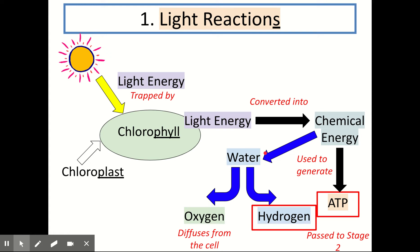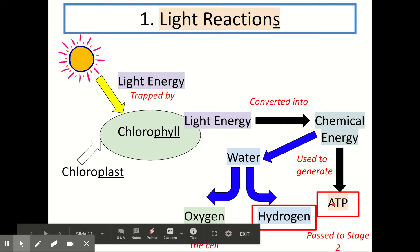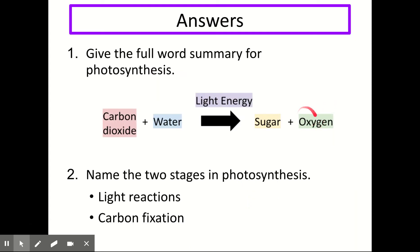Going through that one more time: light energy from the sun is trapped by chlorophyll, which is a pigment within the chloroplast in a plant cell. The light energy is converted into chemical energy, which is used to generate ATP — the molecule we talked about when we did respiration. The chemical energy is also used to split water into hydrogen and oxygen. The hydrogen along with the ATP are passed to stage 2, whereas the oxygen diffuses out of the cell as one of our products.